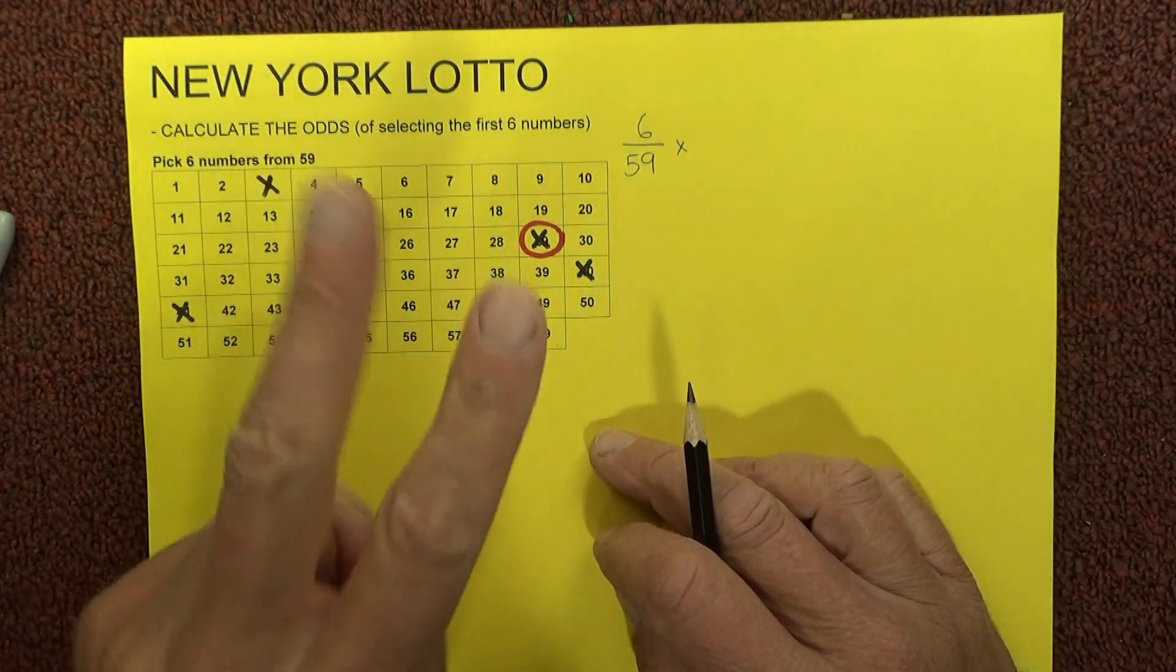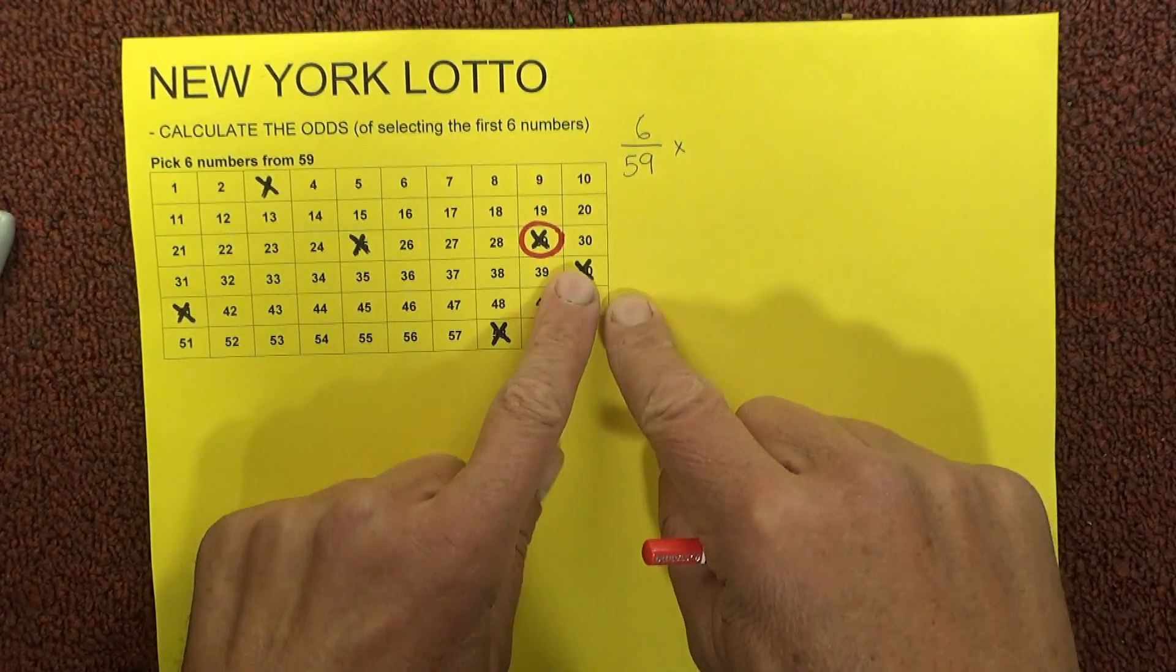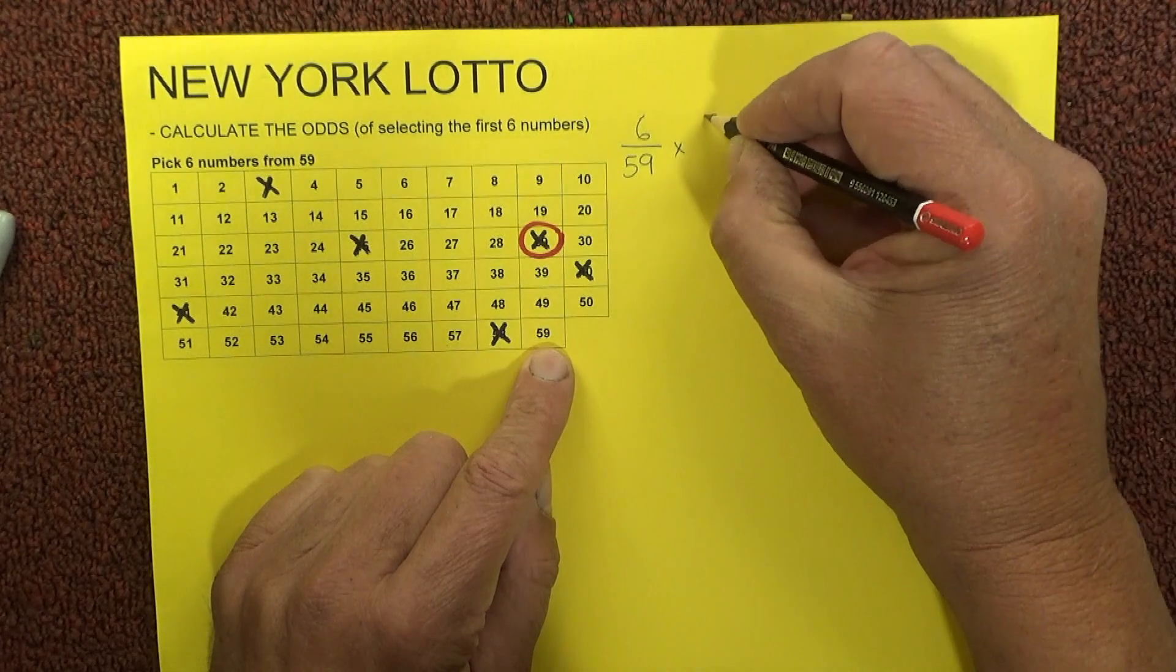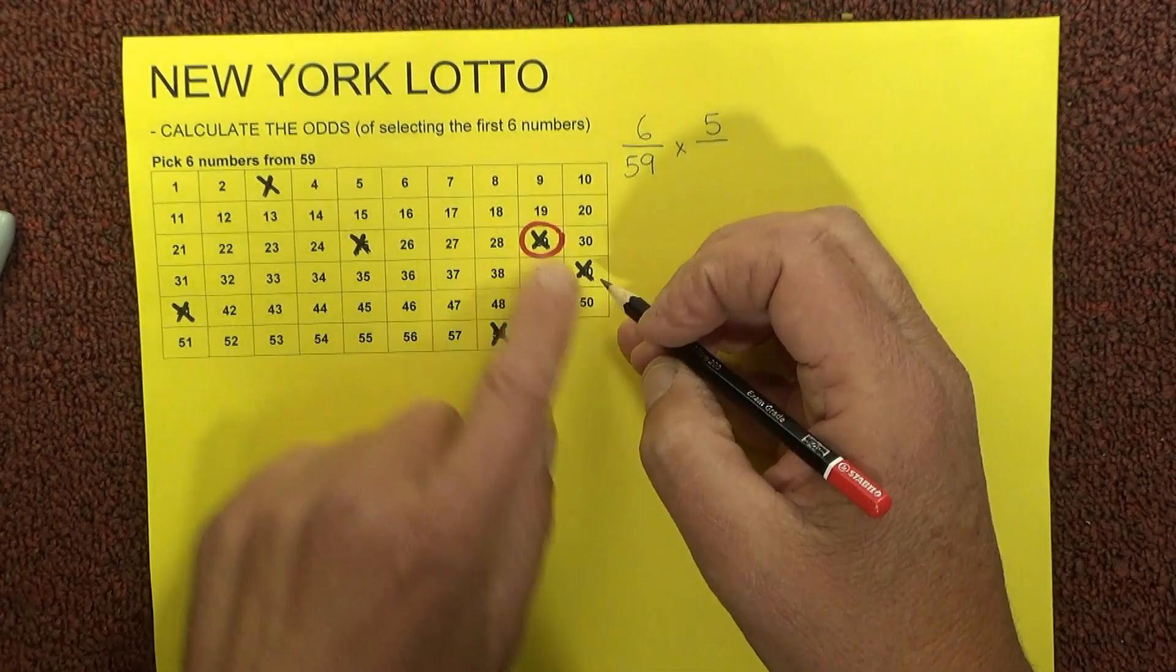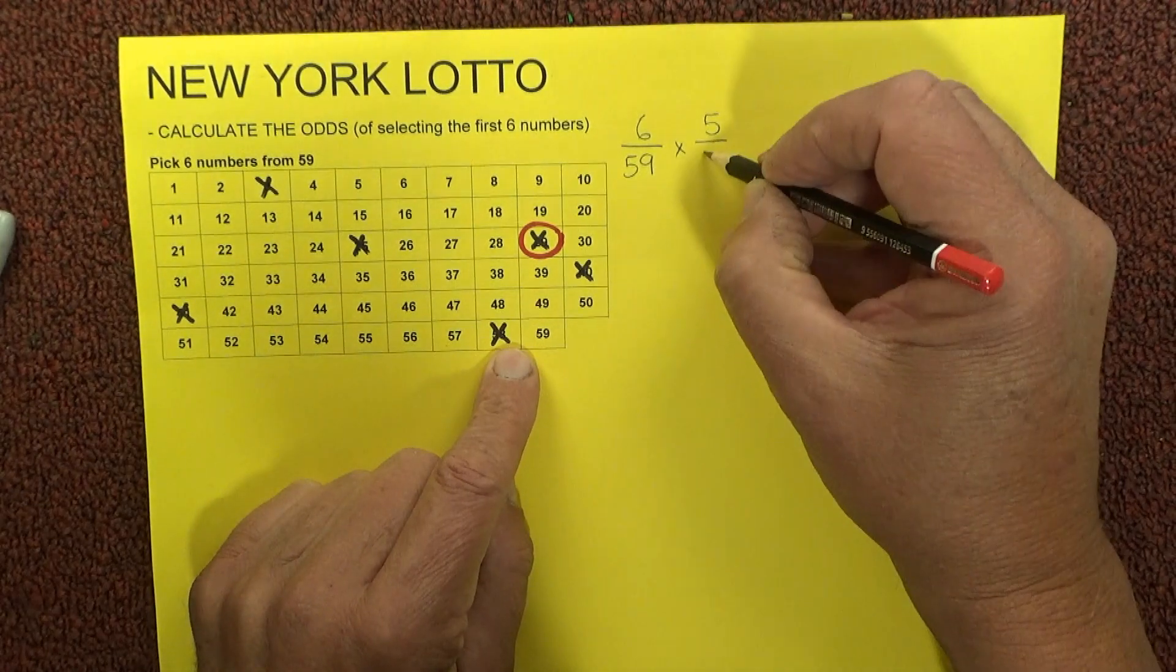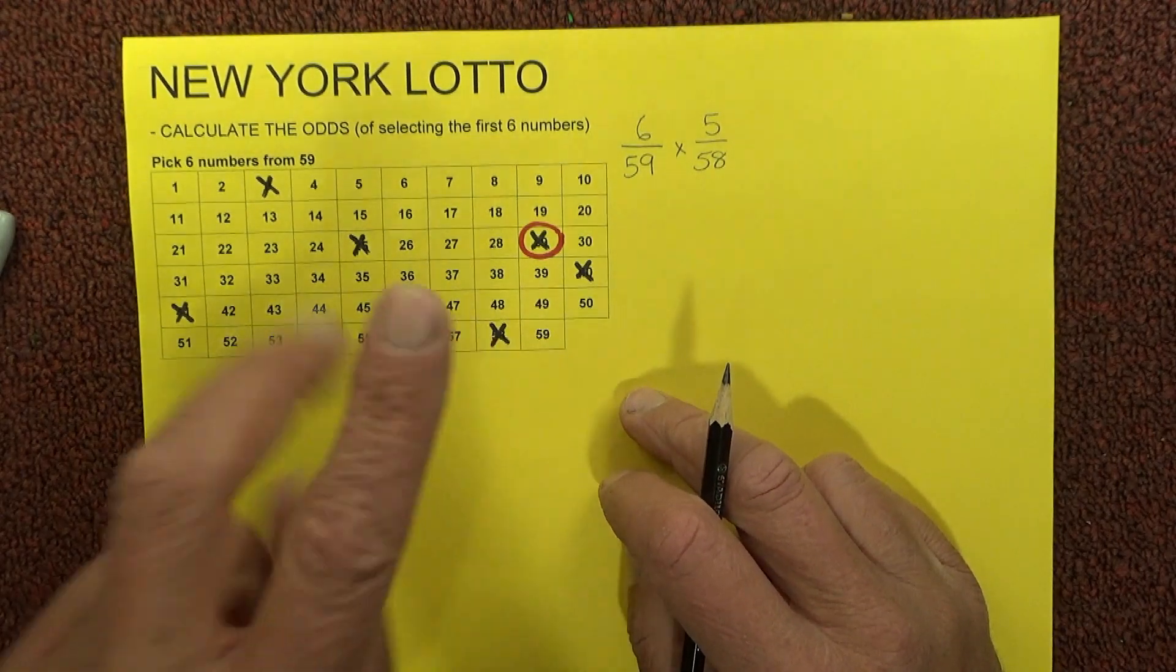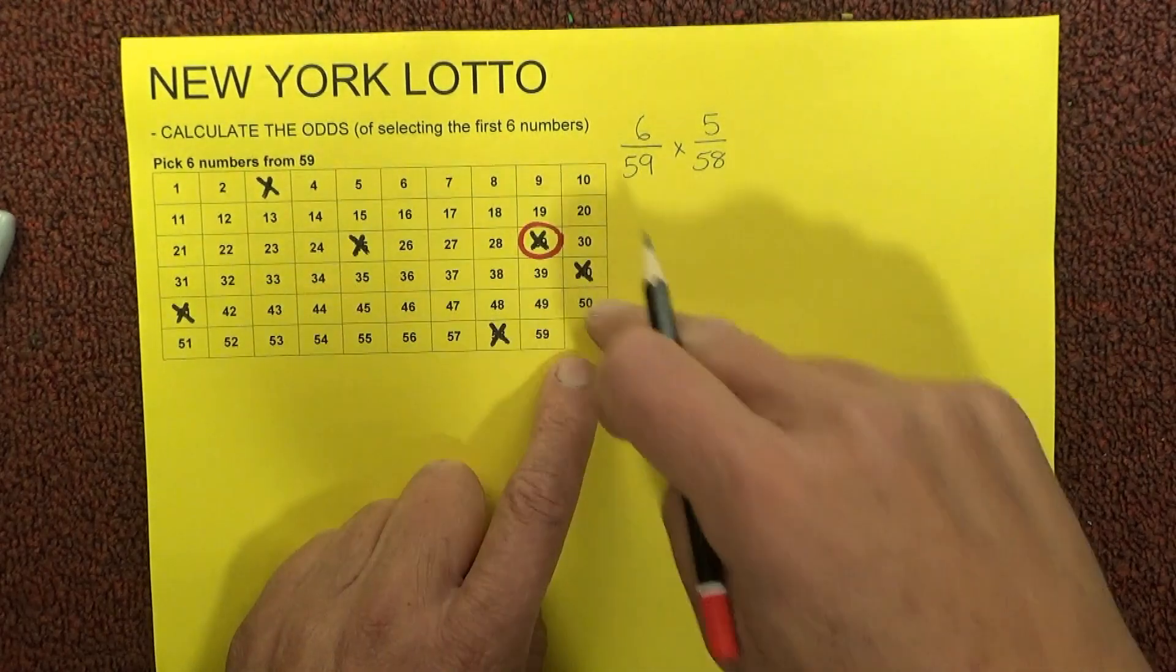Now when the second number's drawn, you've got 1, 2, 3, 4, 5 unmatched numbers on your coupon, so you've got five chances. There's now only 58 balls in the barrel, so you've got five chances in 58 of matching the second number that's drawn.